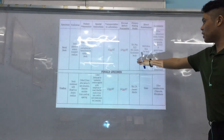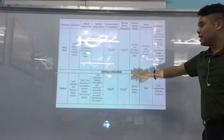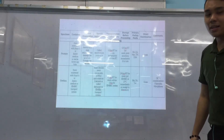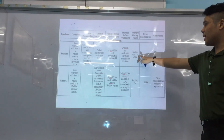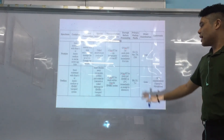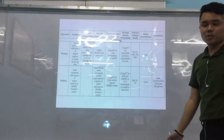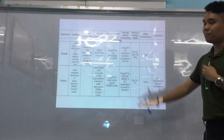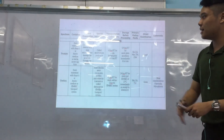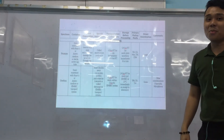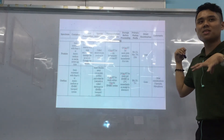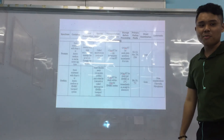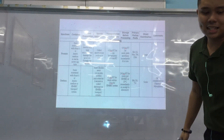For female specimens: rectal swab uses enteric culture media. For female genital specimens and male urethral specimens, Thayer-Martin medium is used since we're primarily looking for Neisseria gonorrhoeae. For prostatitis, still the same approach. Please memorize — or at least familiarize yourself with — the different specimen handling instructions, because Chapter 5 of Bailey and Scott is heavily tested on board exams: how to process specimens, transport, and time limits.